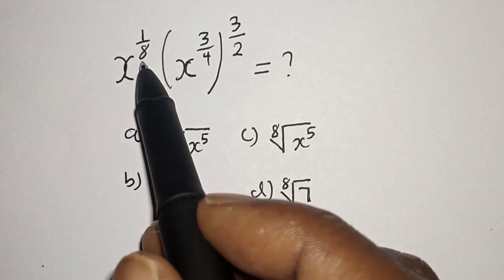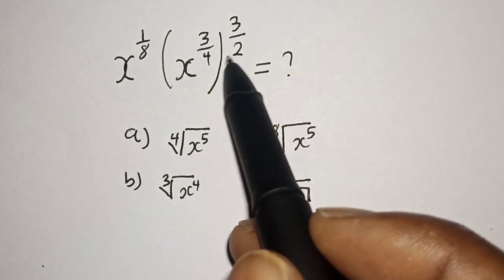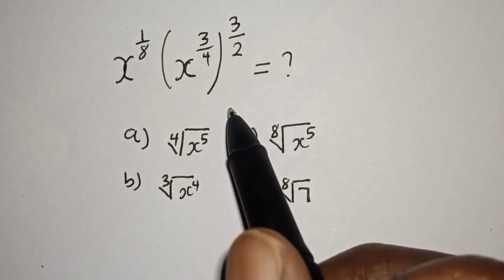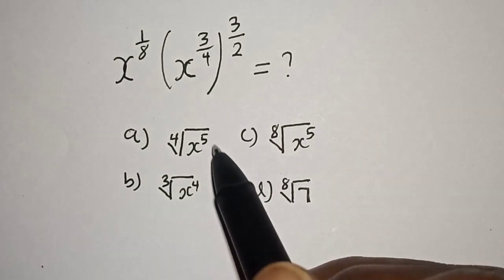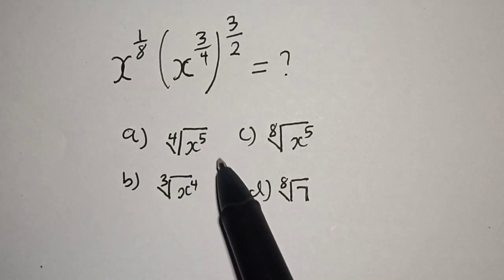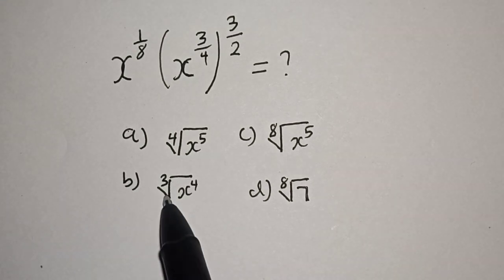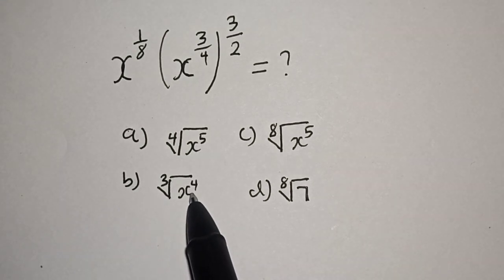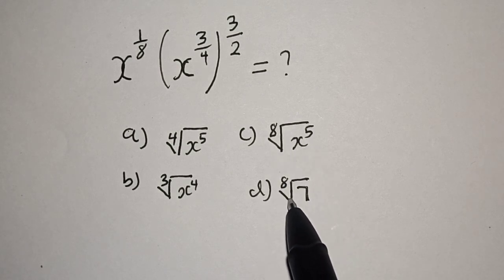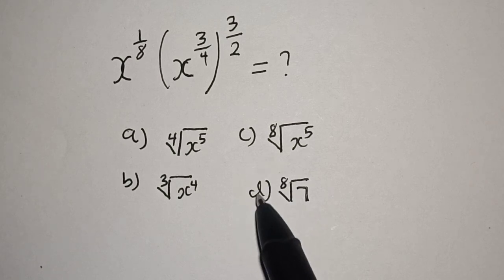We have s raised to power 1 over 8, brackets s raised to power 3 over 4, raised to power 3 over 2 — that is equal to what. Hi everyone, welcome to my class. In this class we want to quickly simplify this math problem. The options are: A is equal to fourth root of s raised to power 5, B is equal to cube root of s raised to power 4, C is equal to 8th root of s raised to power 5, and D is equal to 8th root of s raised to power 7. Let's see what the answer will look like.